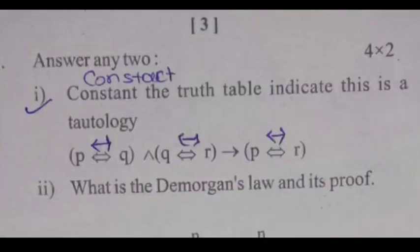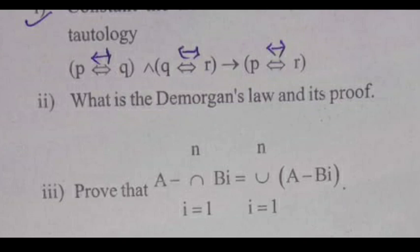Answer any two, which is a constant construct. The truth table indicates this is a tautology. Write the De Morgan's law and then prove. Then, prove that.